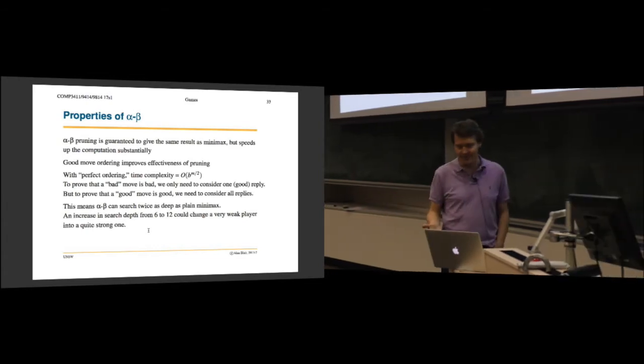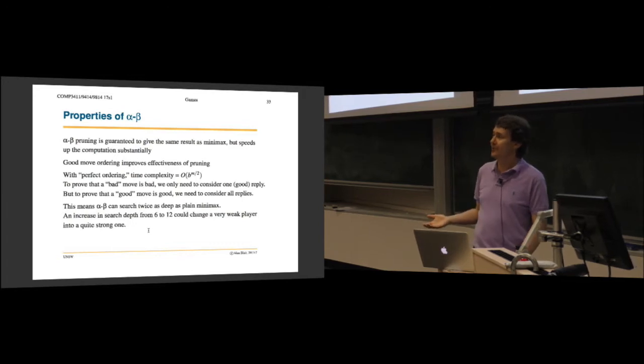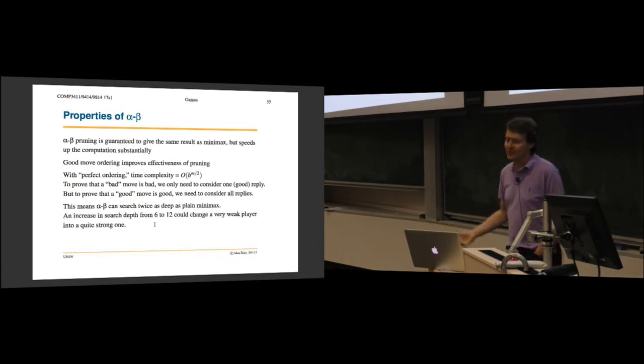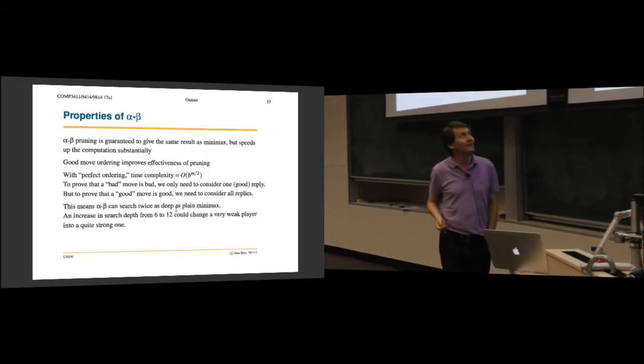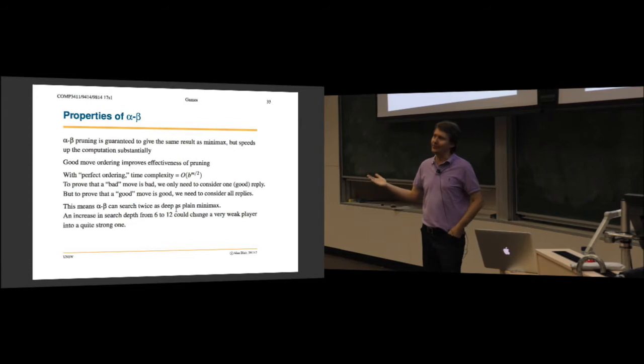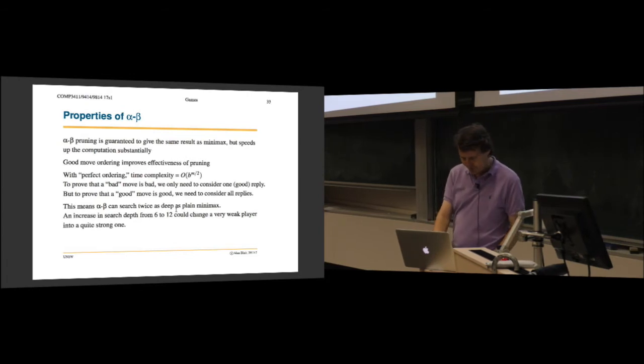Another way to look at it is that you can search twice as deep with the same amount of computation time. So if minimax can only search six moves ahead, by changing to alpha-beta I can now search 12 moves ahead. That makes a huge difference. With chess, if you're looking six moves ahead and then you switch to 12 moves ahead, you become a much stronger player. The reason for this is basically it's not searching half the nodes at each level, it's kind of alternating.